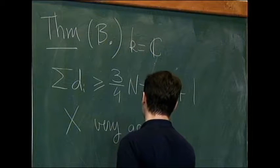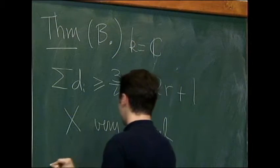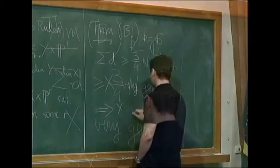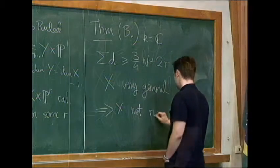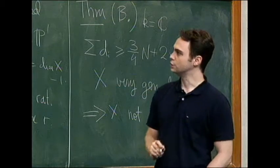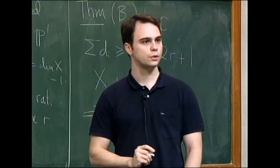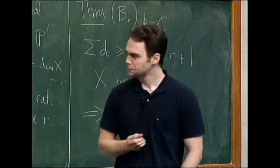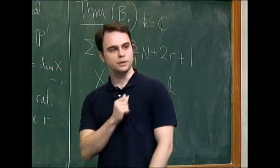So I showed that if the complete intersection satisfies this, the degrees satisfy this condition and the complete intersection is very general, then X is not ruled. So I do not generalize Totaro's result, even though the method of proof of Totaro is very similar to Kolar. Maybe in the future, but not yet.